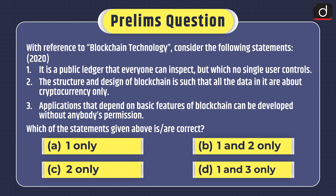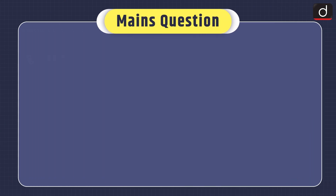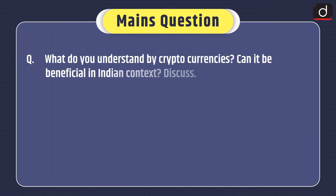Which of the statements given above is or are correct? Options: 1 only, 1 and 2 only, 2 only, or 1 and 3 only? And the Mains question: What do you understand by cryptocurrencies? Can it be beneficial in the Indian context? Discuss.